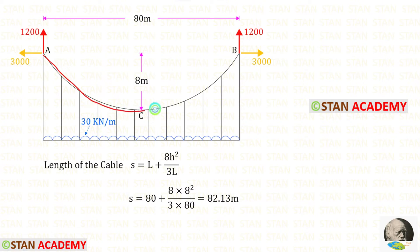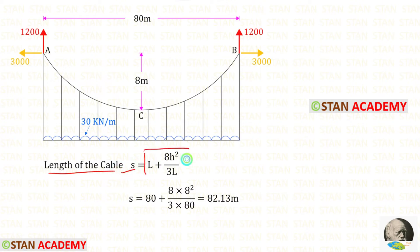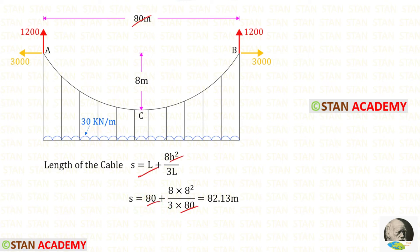Now let us find the length of the cable. The formula for the cable length S is: S = L + (8h²)/(3L). Here L is 80 and h is 8. Applying these values, the length of the cable S comes out to 82.13 meters.